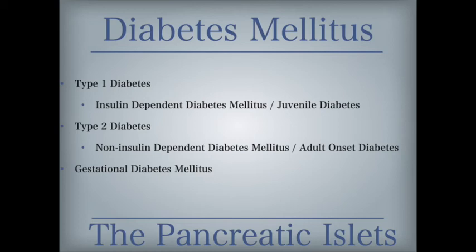Type 1 diabetes, previously known as insulin-dependent diabetes mellitus or juvenile diabetes, is an autoimmune insulin deficiency disorder. Because of the destruction of pancreatic islet beta cells, the body does not secrete enough insulin, and it is treated with carefully regulated insulin replacement therapy. Symptoms include increased urination, constant thirst and hunger, weight loss, blurred vision, extreme fatigue, and slow healing. Only about one in ten individuals with diabetes has this form of the disease.